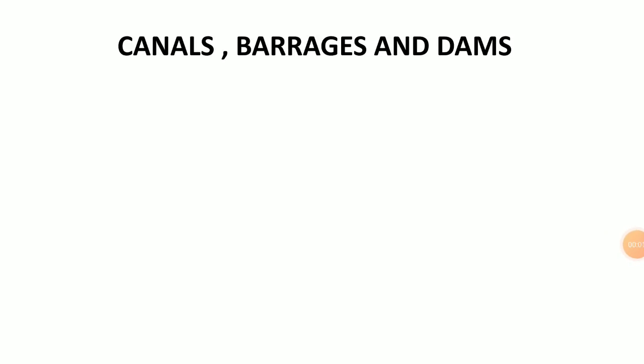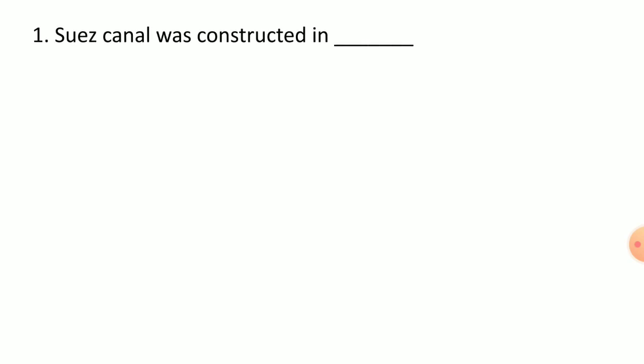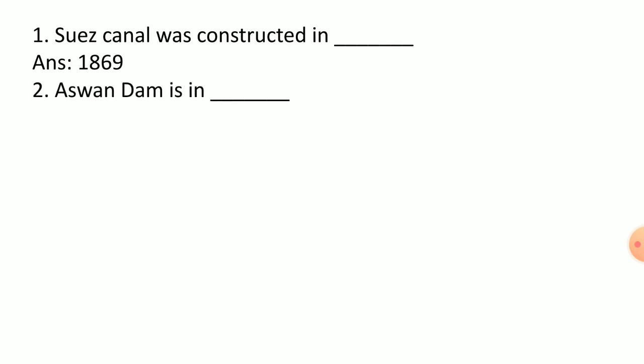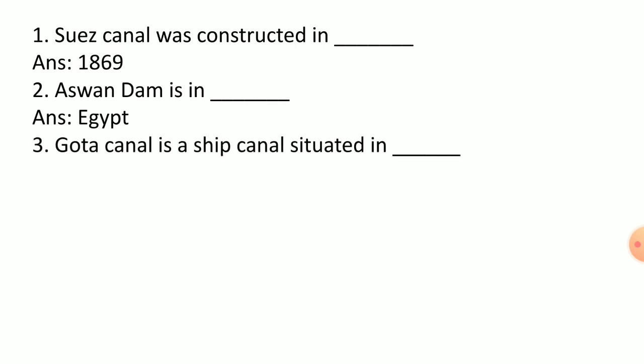Canals, barrages, and dams — here are some important questions. The Suez Canal was constructed in 1869. The Aswan Dam is located in Egypt. The Göta Canal is a ship canal situated in Sweden.